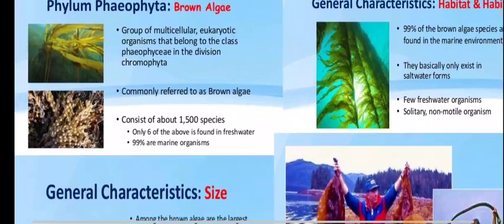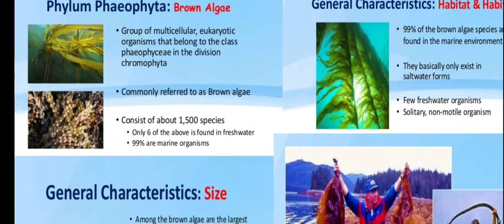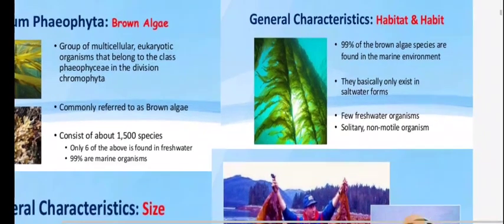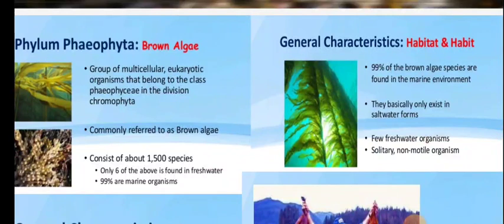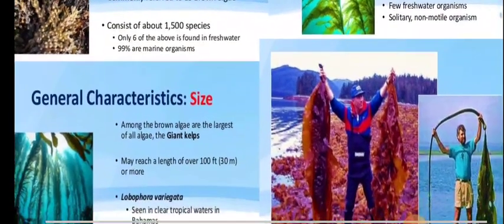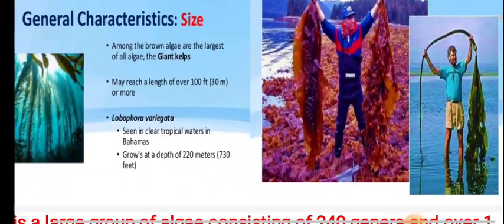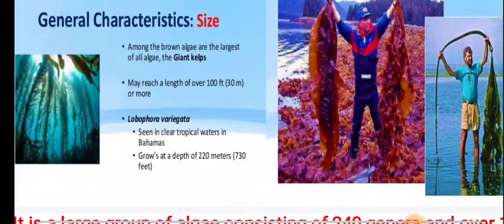About 1500 species are reported from this division, and out of these, only six are freshwater species. So 99 percent are marine water forms in habitat. They are basically found maximum in salt water. Freshwater organisms are generally solitary and non-motile in characteristics.